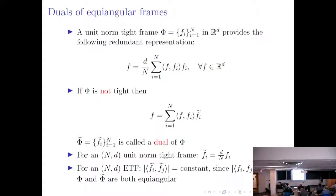We now move to the duals of equiangular frames. Starting with a unit norm tight frame, this provides a redundant representation for any vector in the space: any vector can be written using coefficients calculated with respect to the frame phi, and the representation is also in terms of the same set. This is a property of being a tight frame. If the frame is not tight, we can no longer use the same set; the coefficients are calculated with respect to phi, but we need another set to represent the vector f.